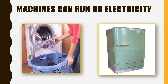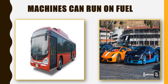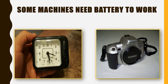Some machines run on electricity, like washing machine, fridge, etc. Some machines run on fuel — fuel means petrol, diesel — like your school van, car, etc. Some machines need battery to work, like clock, camera.